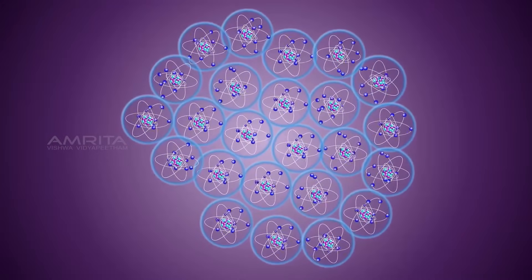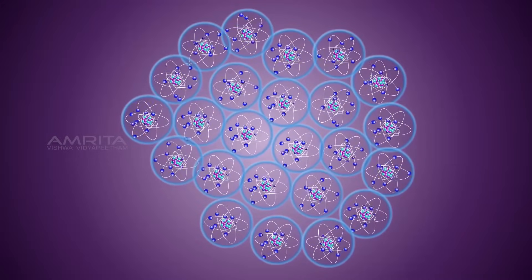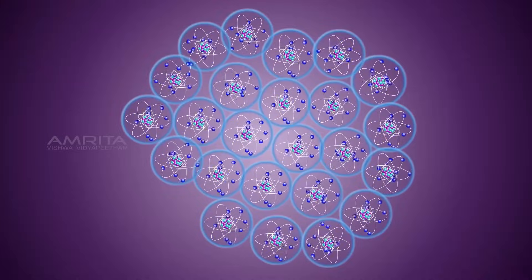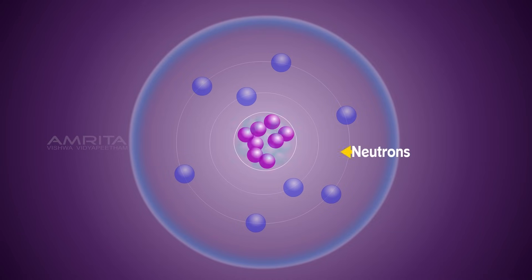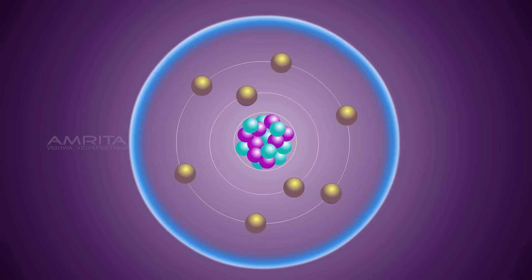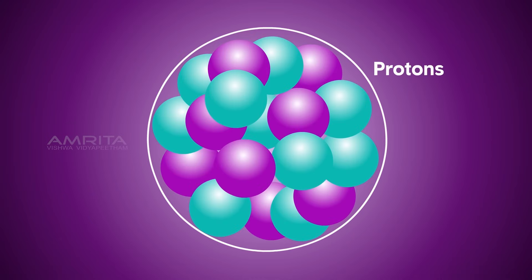These particles are called atoms. Atoms are the building blocks of all material. Atoms are made up of three types of particles called protons, neutrons, and electrons. An atom has a central nucleus with protons and neutrons in it.